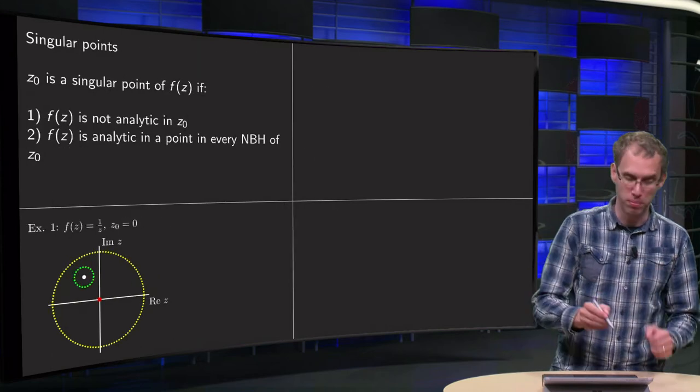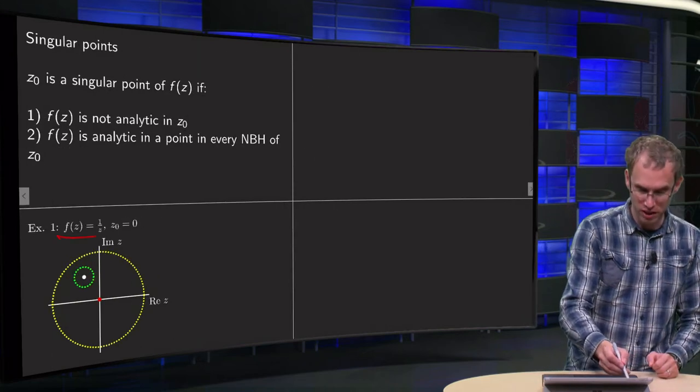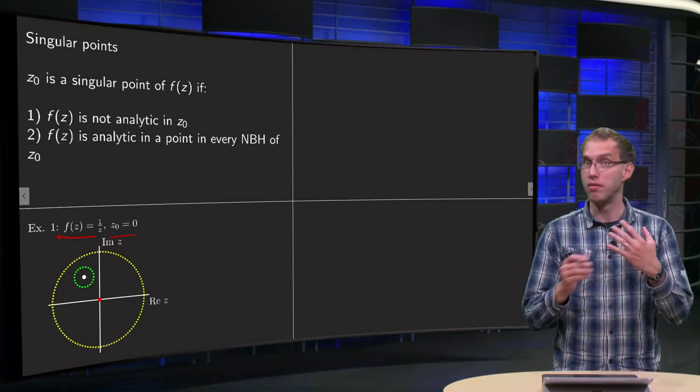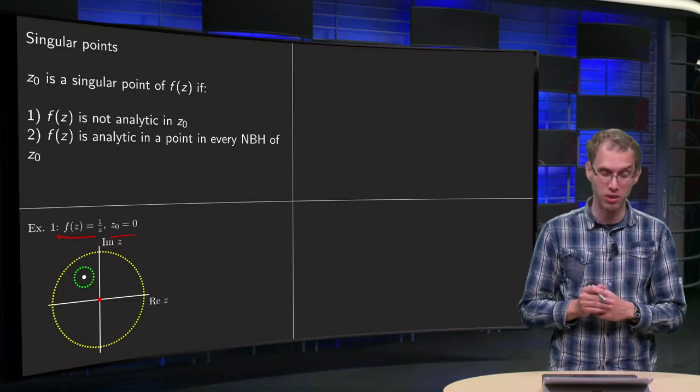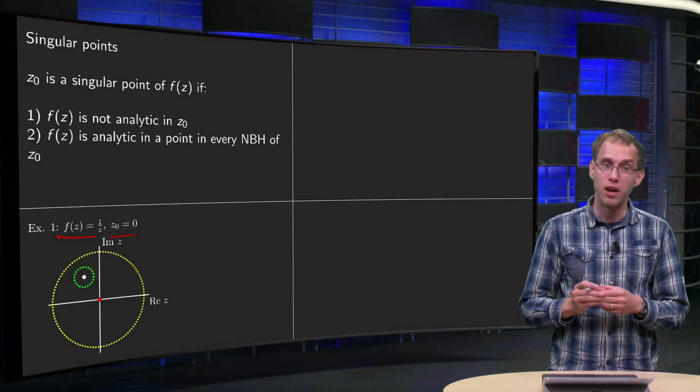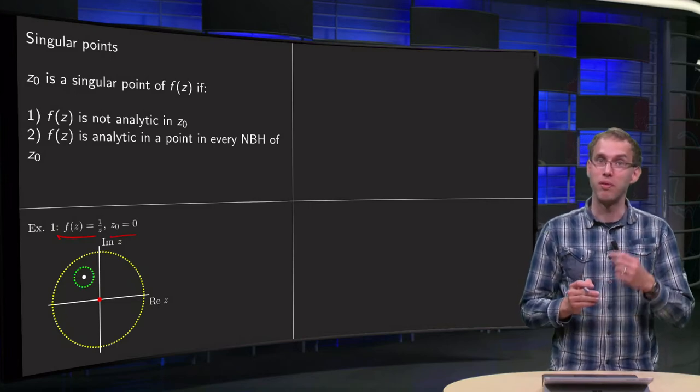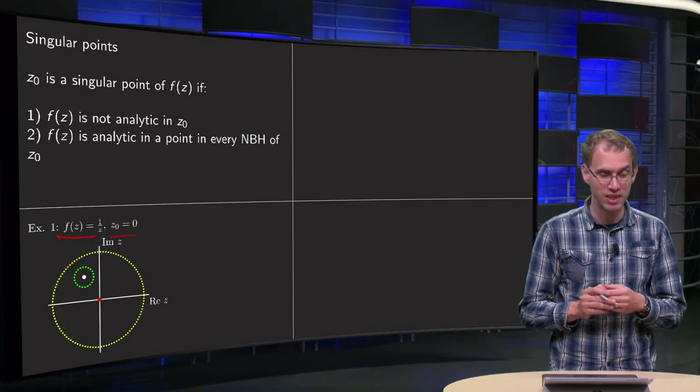So we have for example f of z equals 1 over z and z0 equals 0. Well, f is not even defined there, so certainly not analytic. So is it a singular point or not? Well, then we also have to satisfy the second condition.